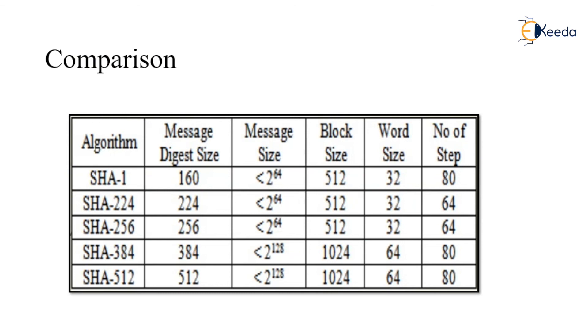This is the comparison of different SHA versions. SHA-1 works upon 160 message digest size, SHA-224 works upon 224, SHA-256 works upon 256, SHA-384 works upon 384, and SHA-512 works upon 512 bits.